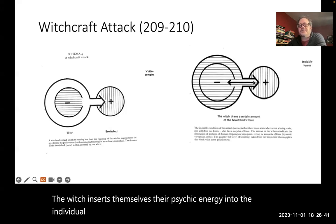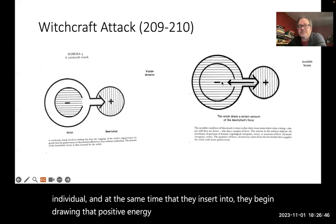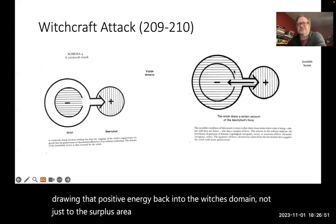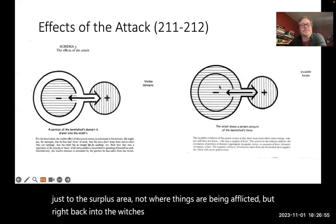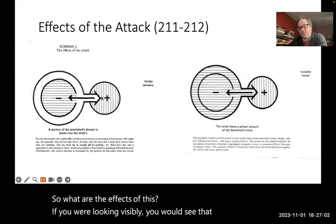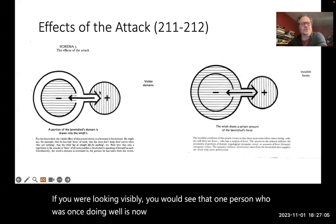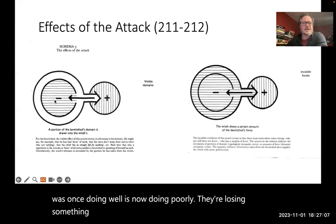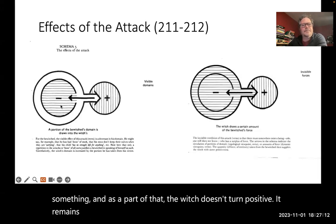And at the same time that they insert into, they begin drawing that positive energy back into the witch's domain. Not just to the surplus area, not where things are being afflicted, but right back into the witch's core domain. So what are the effects of this? If you were looking visibly, you would see that one person who was once doing well is now doing poorly. They're losing something. And as a part of that, the witch doesn't turn positive. It remains negative, but it gets a little positive in it.